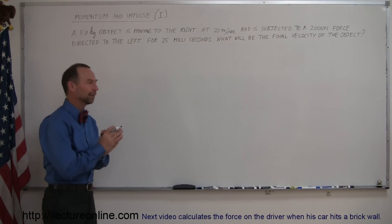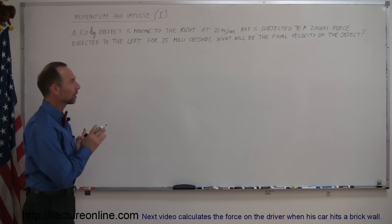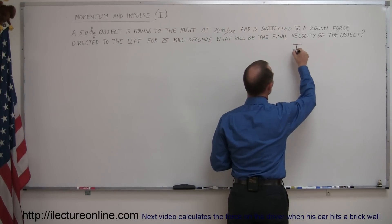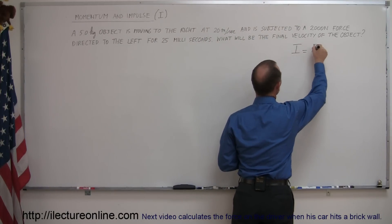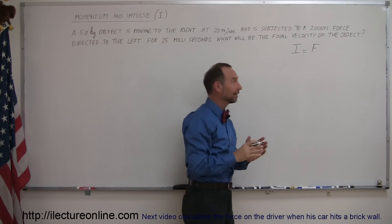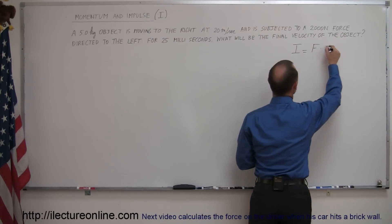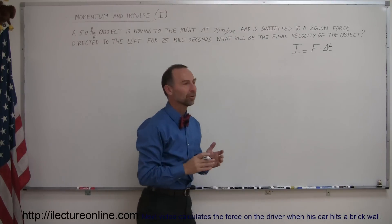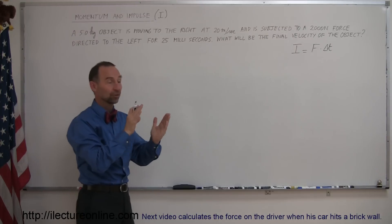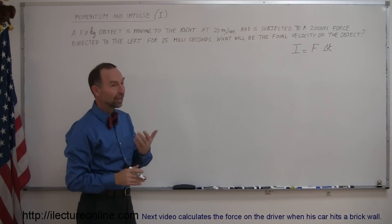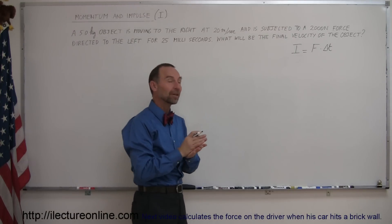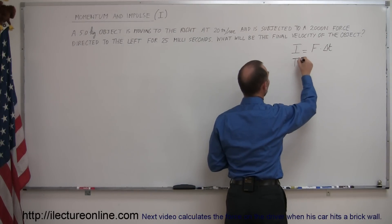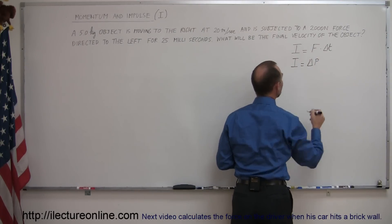Just to get us back where we need to be and understanding what this is all about, we can define impulse in two ways. Impulse can be defined as a force that is applied to an object times the amount of time that force is active on the object — we'll call that delta T. So impulse can be defined as a force acting for a certain amount of time on an object, which then causes a change in momentum of that object. We can also define impulse as the change in momentum, p.